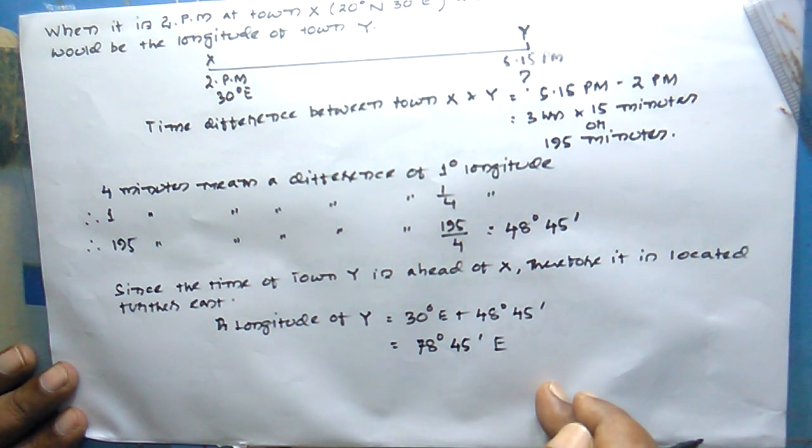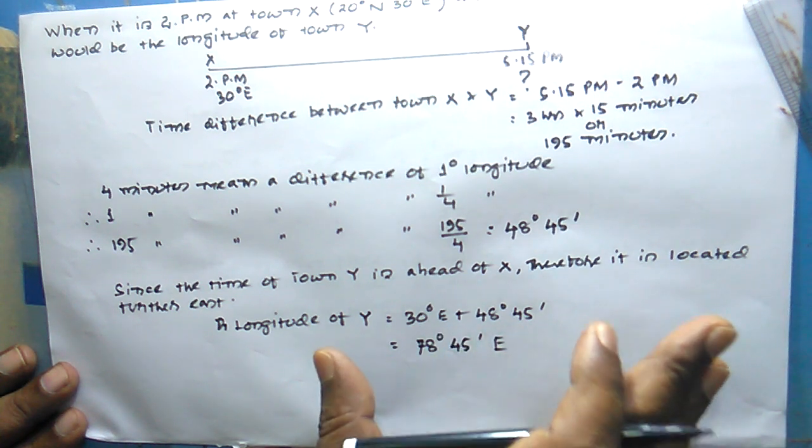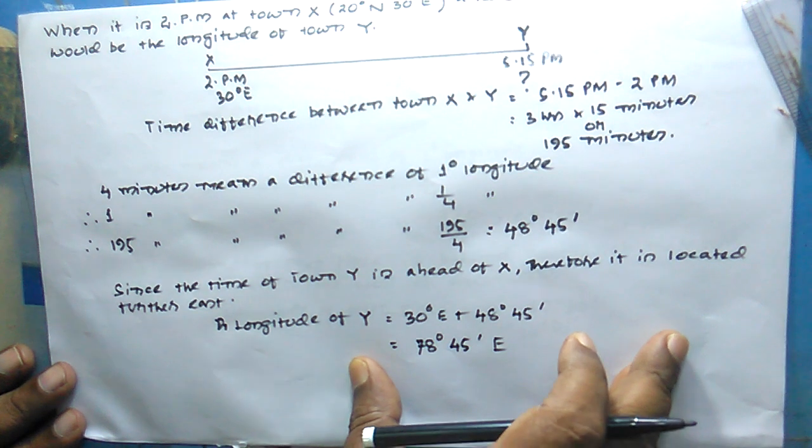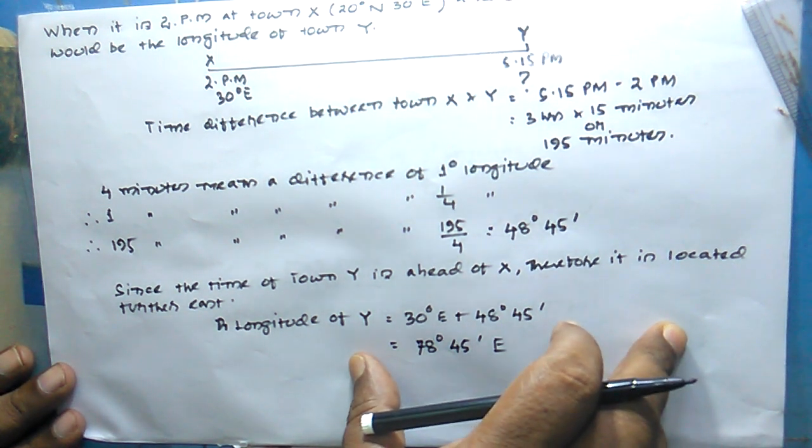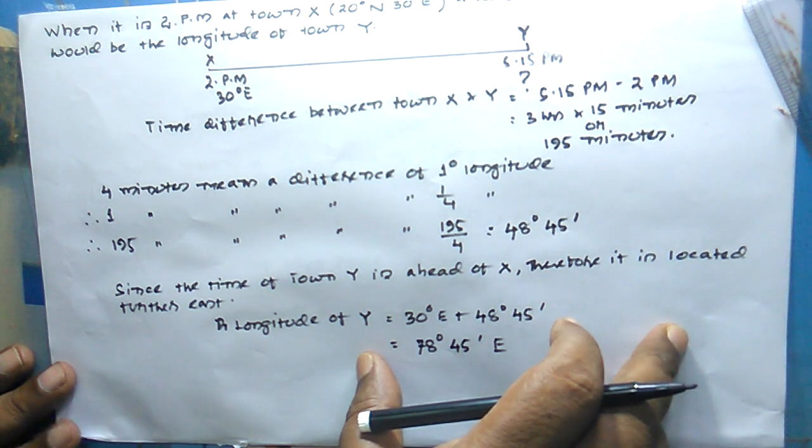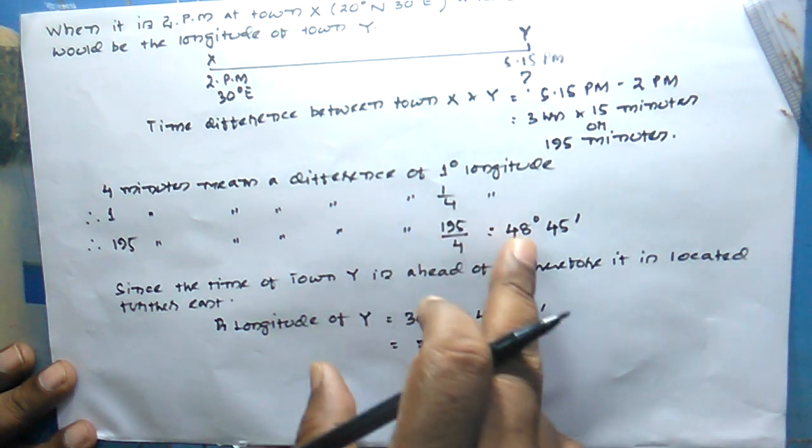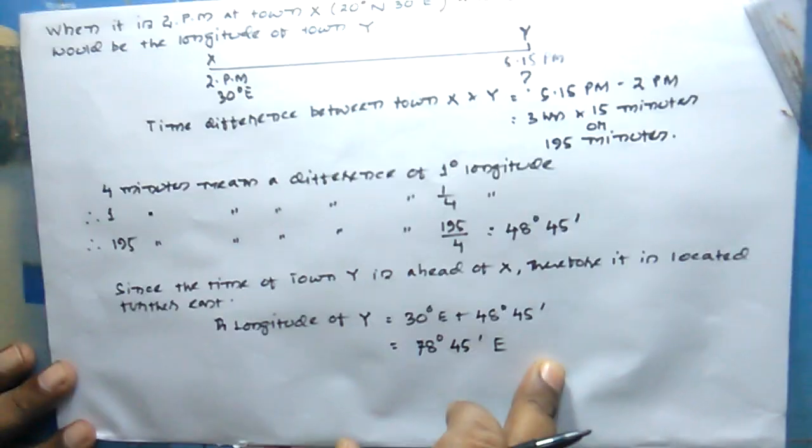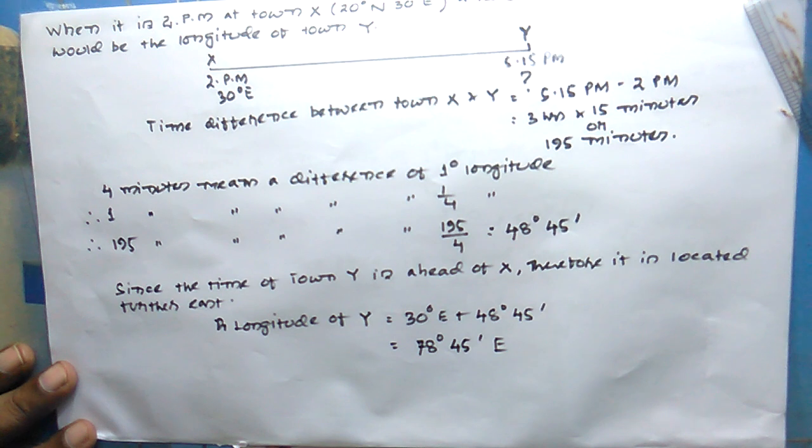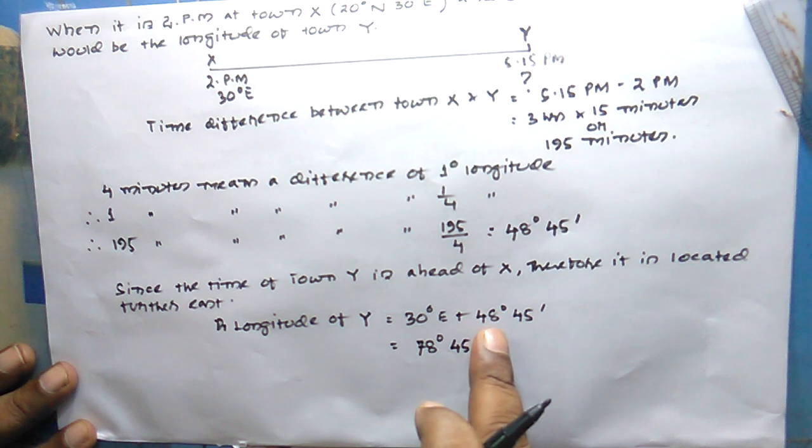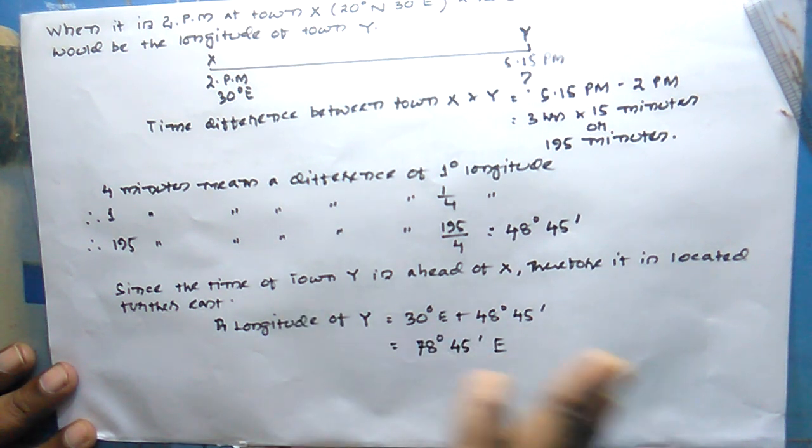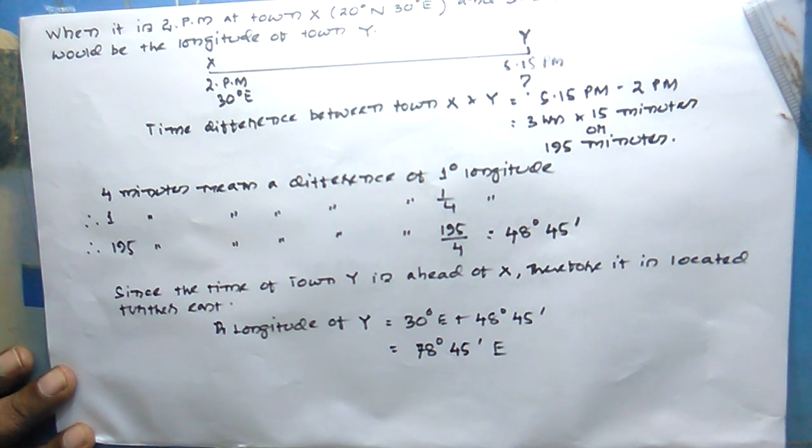I hope you have understood it. There is another similar sum in your book, number C, which has exactly the same time difference, but that place is located in the Western Hemisphere. Do try it.